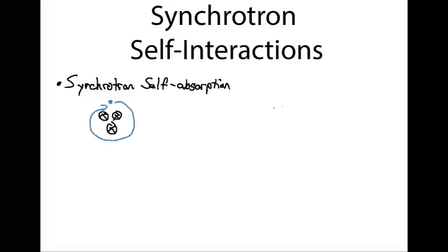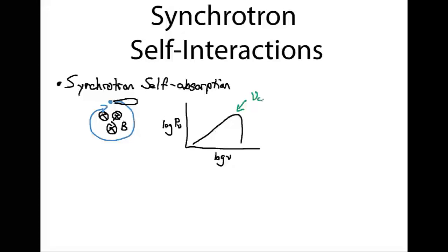You'll recall in a previous lecture that we derived the spectral emission of synchrotron emitting electrons. For an electron spiraling in a magnetic field B, we found that due to relativistic beaming effects, we no longer saw emission only at a single frequency as in cyclotron emission. Rather, the spectrum was highly peaked at the critical cutoff frequency ν_cut, which was roughly γ² times the cyclotron frequency. We have a characteristic ν^(1/3) slope at low frequencies and an exponential cutoff — one half times e to the minus ν over ν_cut — at high frequencies.